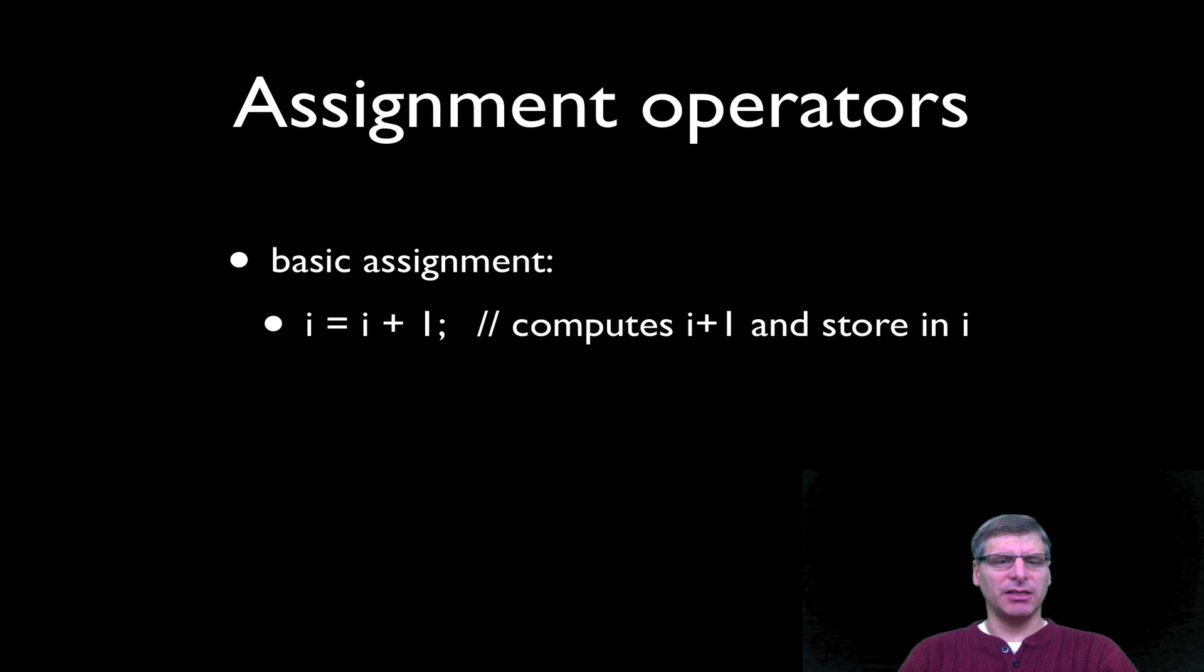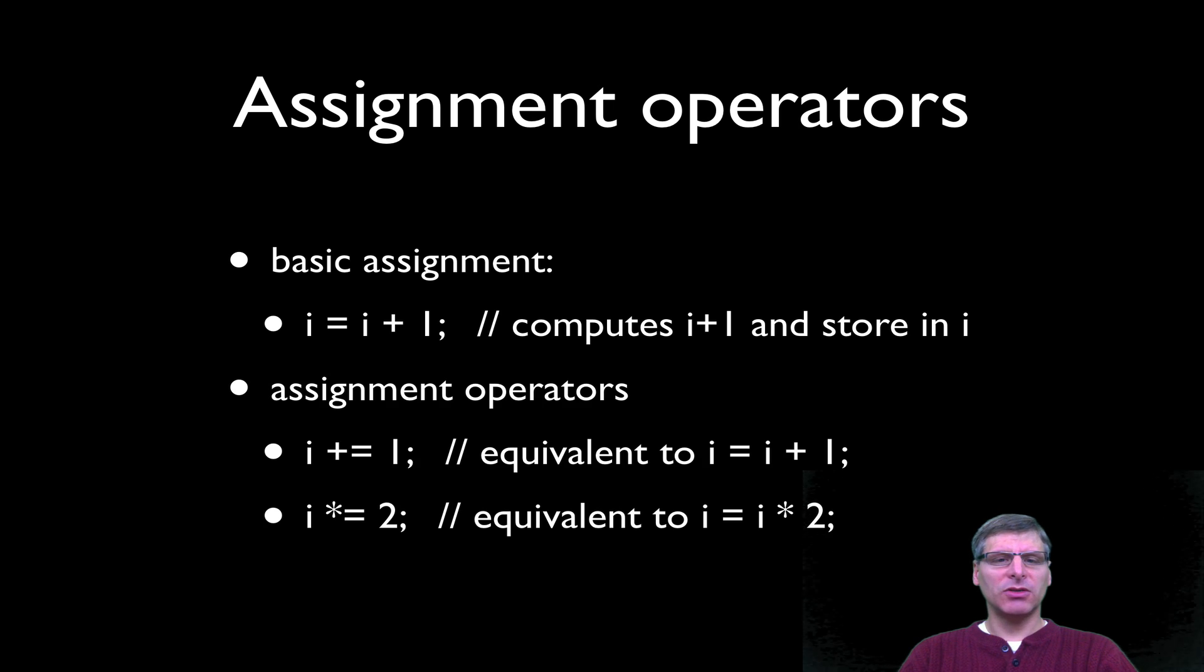Let's talk briefly about assignment operators. We've already seen a simple assignment operator, such as this, the basic assignment. So here I have i equals i plus 1. And this simply computes the value of i plus 1, and then stores that value in the variable i. We can also do assignment operators like this. So I have i plus equal 1. And this is equivalent to the statement i equals i plus 1. Or I have the statement i times equal 2, which is equivalent to i equals i times 2. And I can do that with all my binary operators. I can put the binary operator followed by an equal, and the same pattern applies.